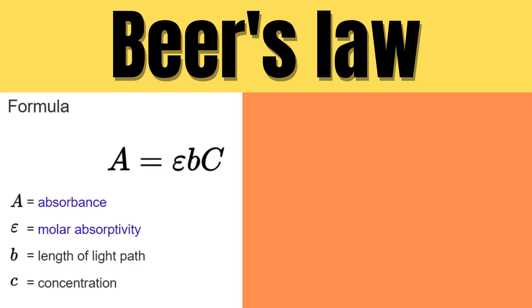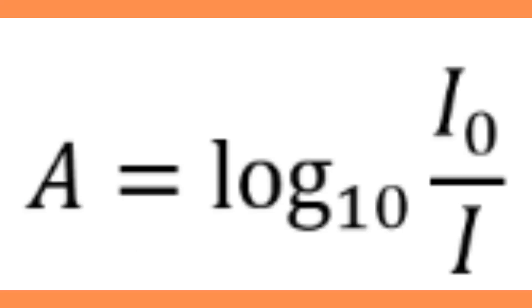Two side notes here. Number one: in my experience the spectrometer gives its output in absorbance, but if for whatever reason you need to do this calculation based on the input and output intensities, here is the formula for that as well. Absorbance equals log incident light divided by output light. So that's how we get the absorbance.